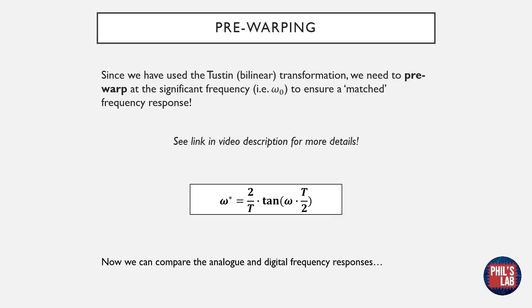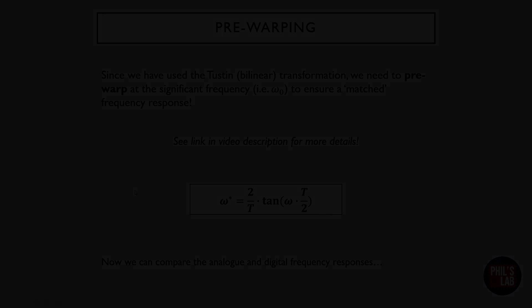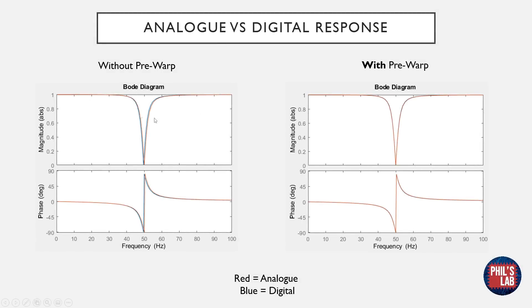Now let's compare our analog and digital filter frequency responses. On the left, we can see the Bode plot of our analog and digital filters without pre-warping. The red trace is the analog prototype, and the blue trace is the discretized digital system. As you can see, the frequency domain fit is already pretty good, but there's a definite offset between the responses.